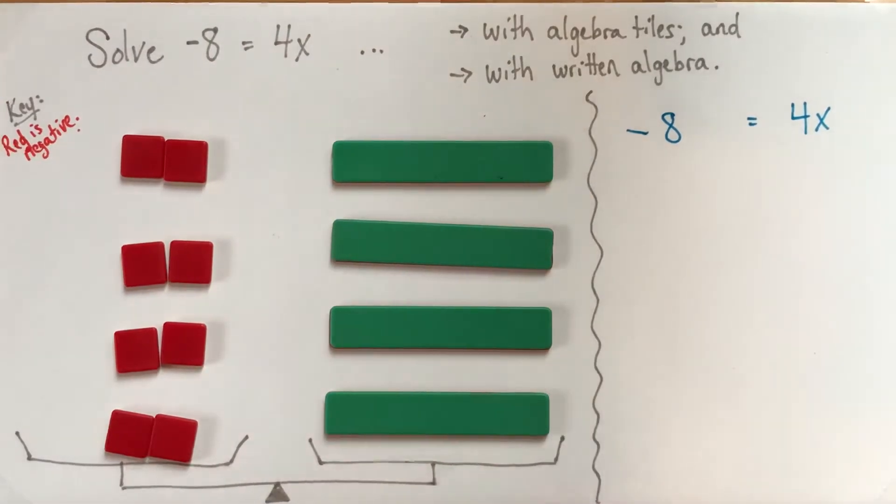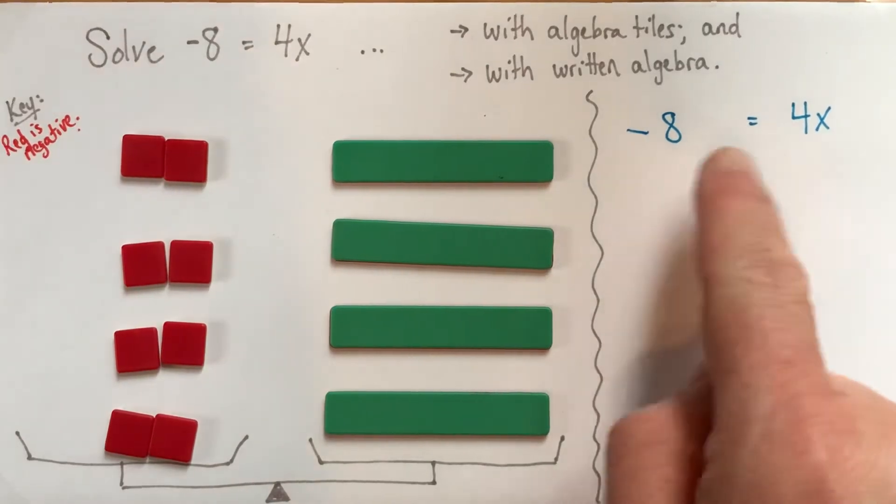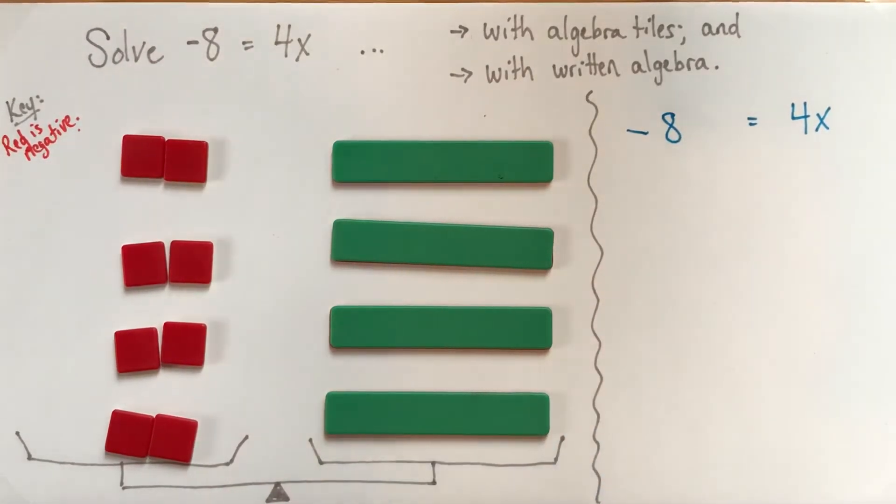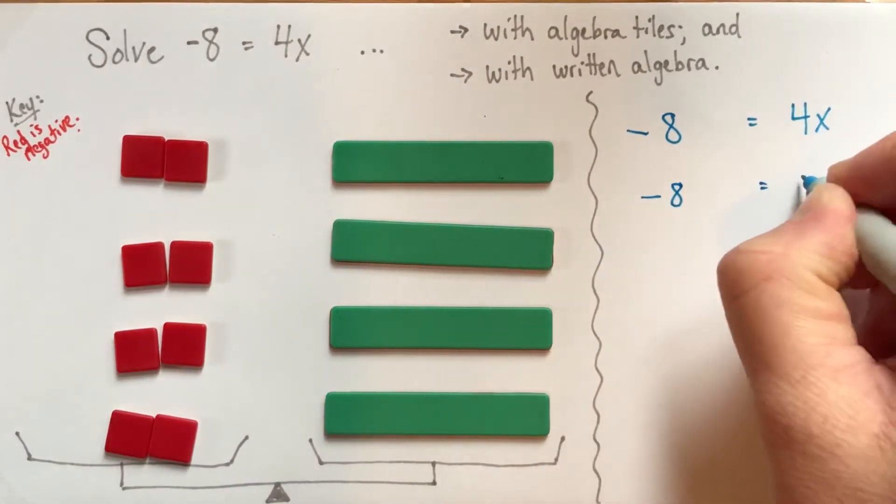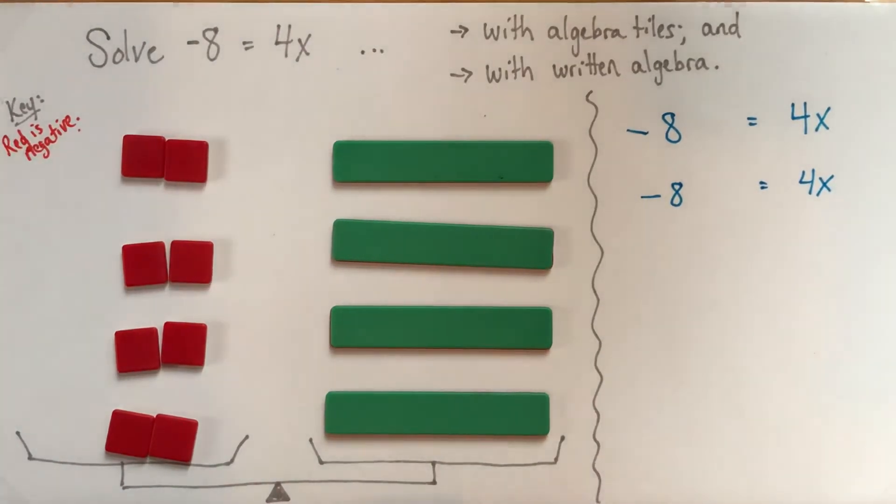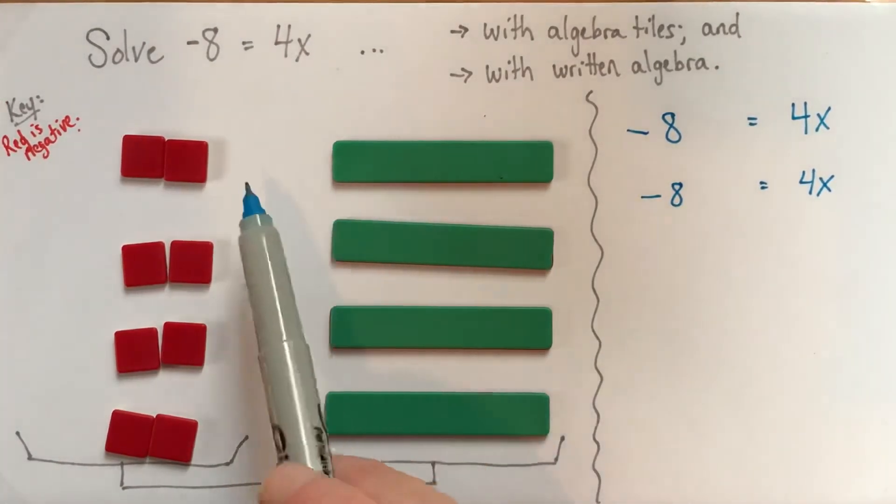So before I actually move any more tiles, I've just reorganized them so far, we can think about, for our algebra, we have to make explicit what operation that was. So as we think about it, I'll just copy down what we had before. So we had, on each side,